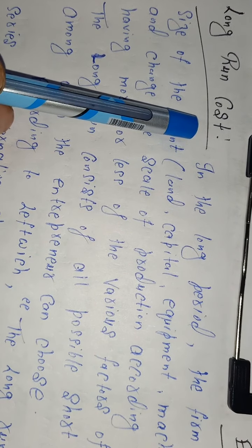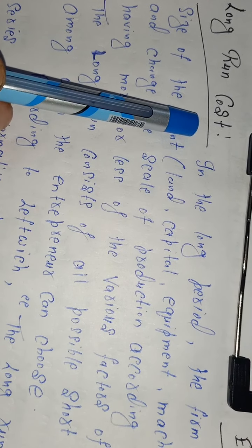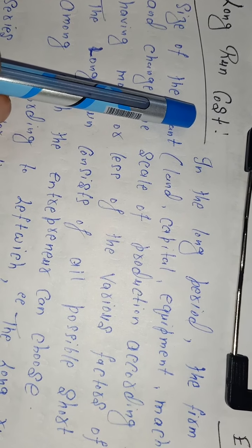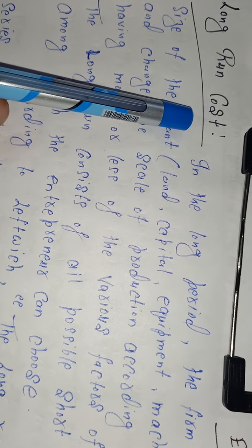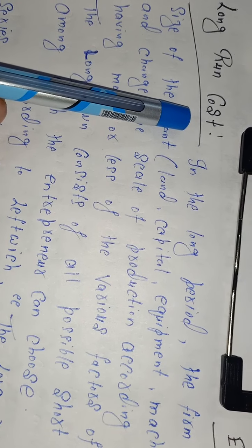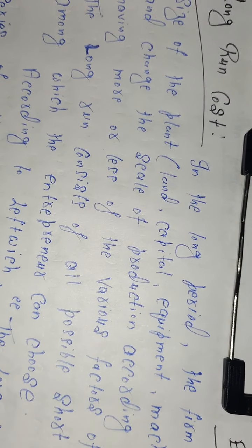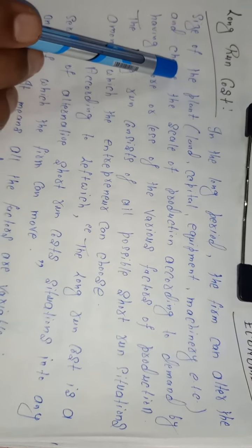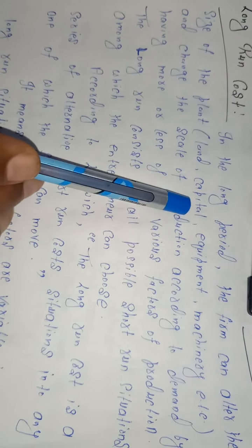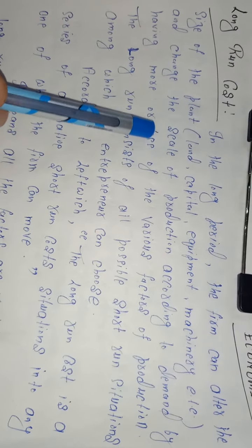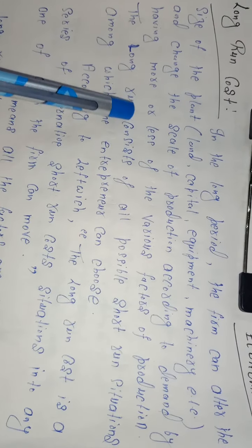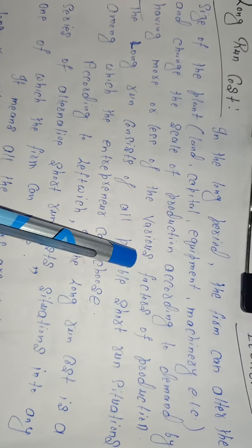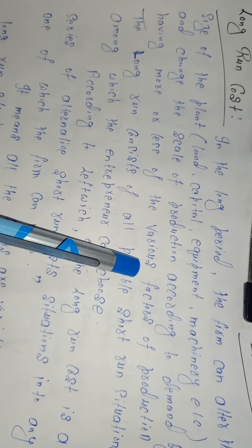As we discussed, the short run is that particular time period where some factors are fixed and some are variable. But in the long run, it is a time period where all factors are variable. This means that in the long period, the firm can alter the size of the plant — that is, land, capital, equipment, machinery, and so on — and change the scale of production according to demand by having more or less of the various factors of production. The long period is essentially a summation of short run periods.